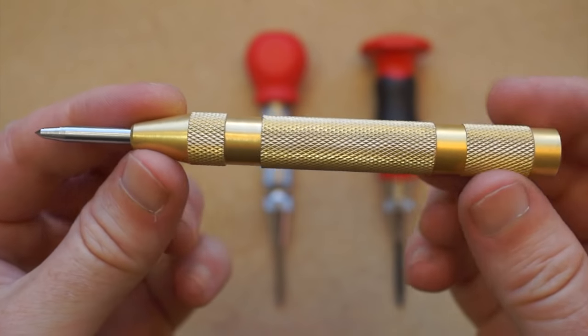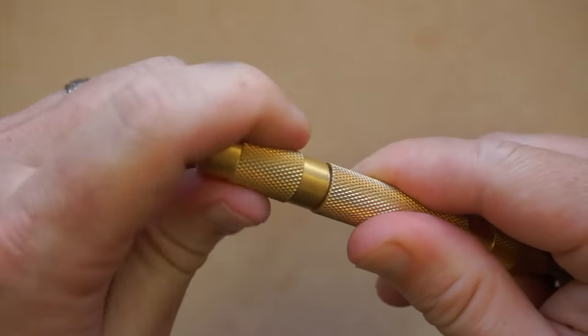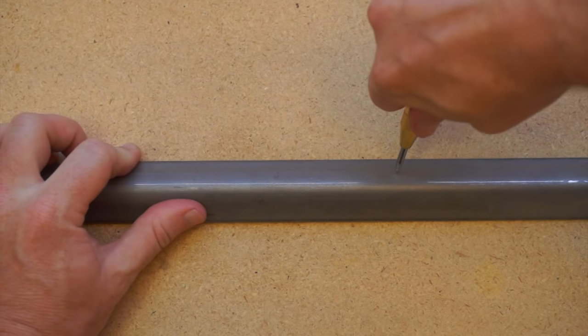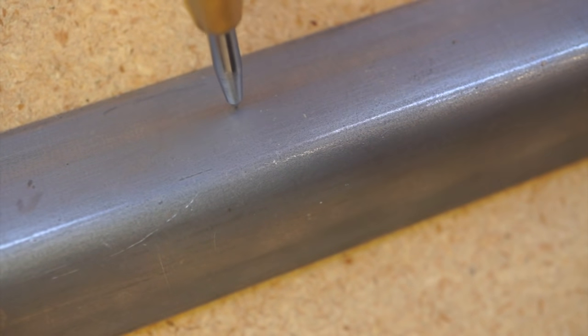So here's the generic punch you've probably used before. Up here you can adjust the striking force, loose is less, tight is more. You push it into the material you want to make a dimple on until it clicks, and then you've made your mark.